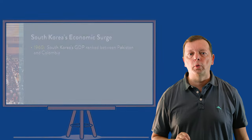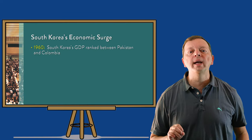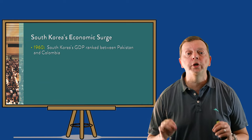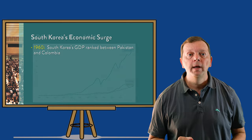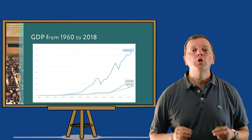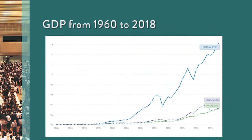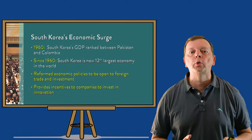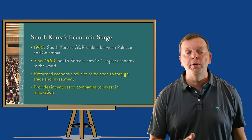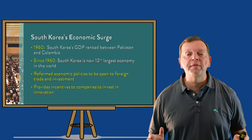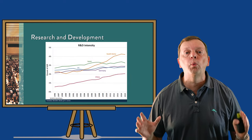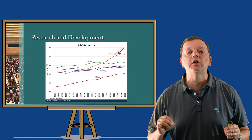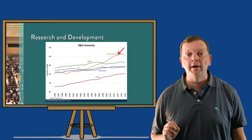Another economic miracle lies across the Sea of Japan in South Korea. In 1960, South Korea was really just an agricultural country with a GDP ranking between Pakistan and Colombia. But since that time, South Korea's economy has grown into the 12th largest economy in the world. Like Japan, South Korea reformed its economic policies to be open to foreign trade and provided incentives to its companies to invest in innovation. In fact, South Korea leads the world in the amount of research and development it spends each year as a percentage of its economy.